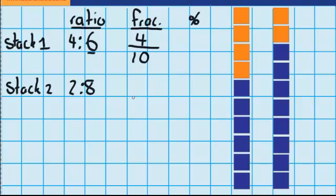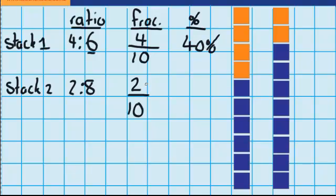And in my second stack, two of them are orange, and there are ten blocks in the stack, so two tenths of them are orange. I know that as a percentage, four tenths is 40%, and for stack two, two tenths is 20%.